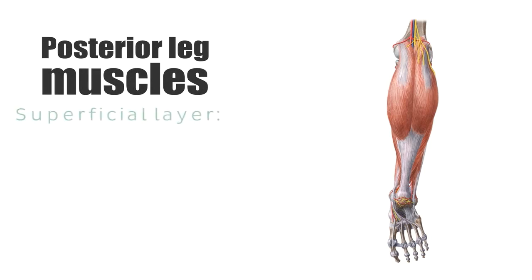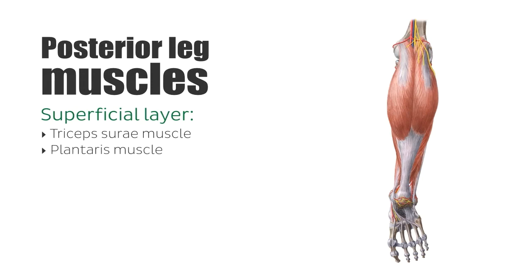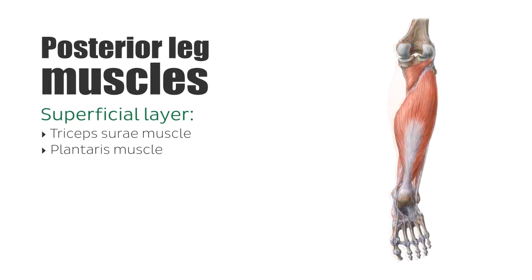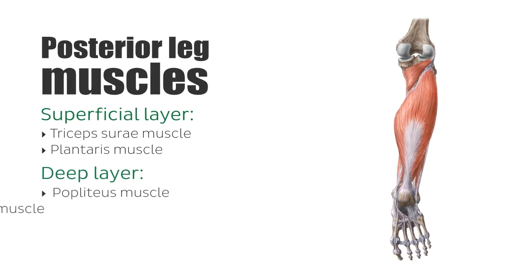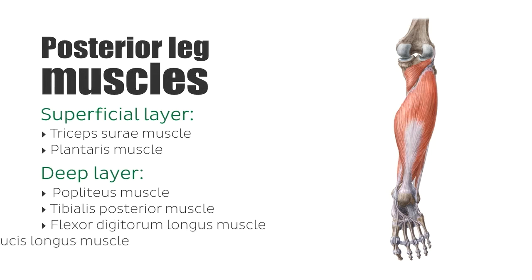Now there is one superficial layer which consists of two main muscles: the triceps surae and the plantaris muscle. The deep layer consists of muscles: the popliteus, the tibialis posterior, the flexor digitorum longus, and the flexor hallucis longus.